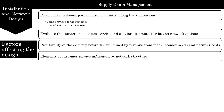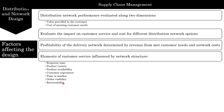Here are some elements of customer service which are influenced by a network structure: response time, product variety, product availability, customer experience, time to market, order visibility, and returnability. Response time is the amount of time it takes for a customer to receive an order. Product variety is the number of different products or configurations offered by a distribution network. Product availability is the probability of having a product in stock when the customer order arrives. Customer experience includes the ease with which customers can place and receive orders and the extent to which this experience is customized.